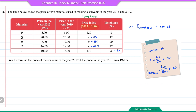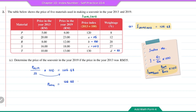To find the price of the souvenir in 2019, we use the composite index formula. The price in 2019 divided by the price in 2013 (which is RM35) multiplied by 100 equals 126.68. Rearranging: price in 2019 = 126.68 × 35 ÷ 100. The answer is RM44.34.